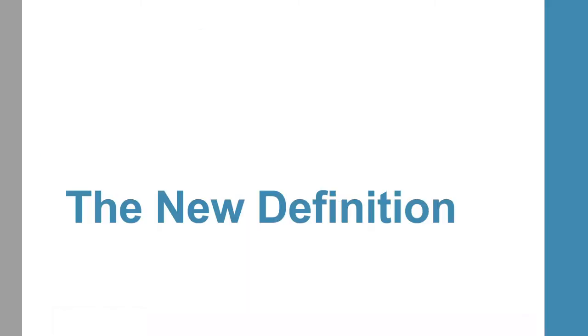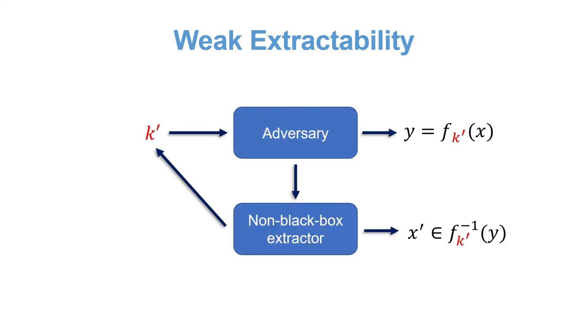So let me present the new definition. The main difference in our variation is weak extraction, where we allow the extractor to sample the keys for the adversary for which he is supposed to extract. We do require that the simulated keys are computationally indistinguishable from a predefined distribution of keys.